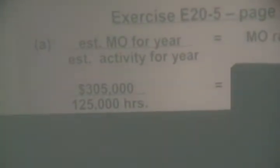Can you find the two numbers we need? $305,000 was the overhead for the whole year, and 125,000 hours was the estimated machine usage. We expected the machine to work all year long. Get your calculators out and participate — you'll learn more. Anybody got that number? 2.44.